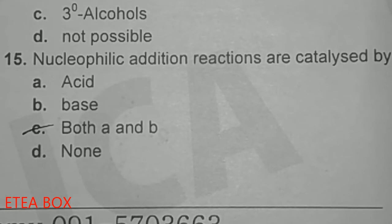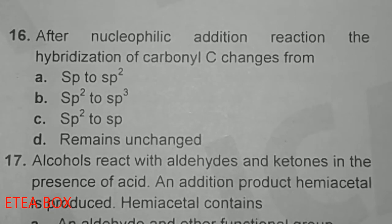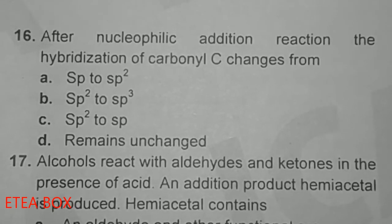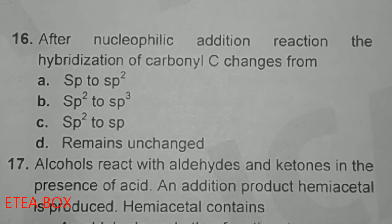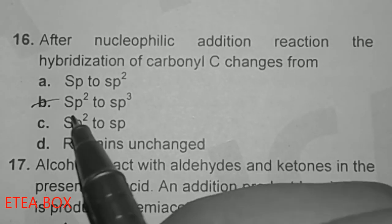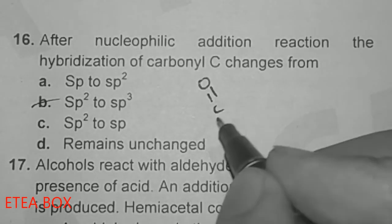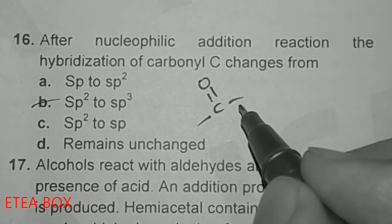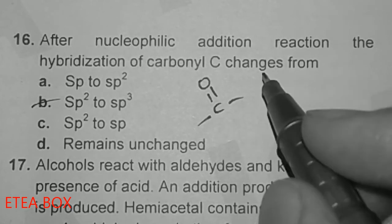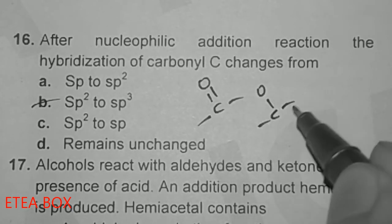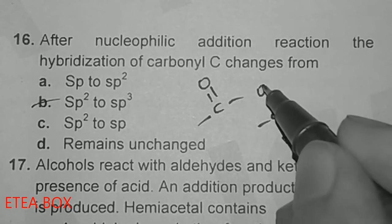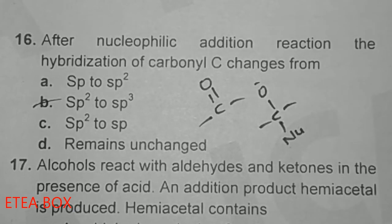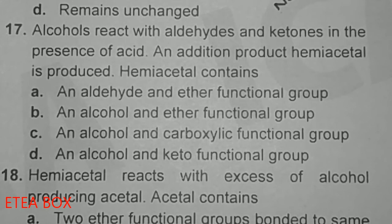After a nucleophilic addition reaction, the hybridization of the carbonyl carbon changes from sp2 to sp3. The carbonyl carbon starts with sp2 hybridization, and when a nucleophile attaches to it, it becomes sp3 hybridized.